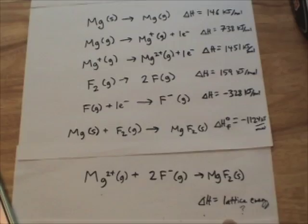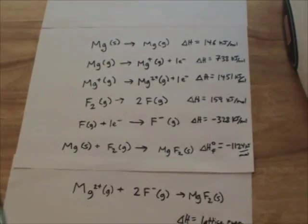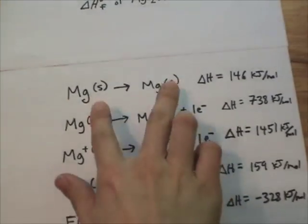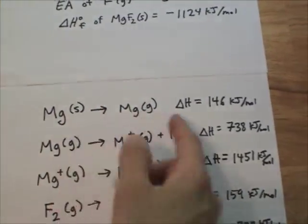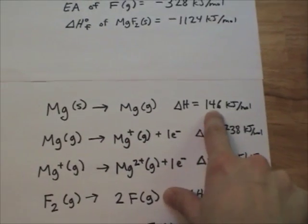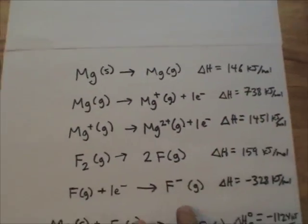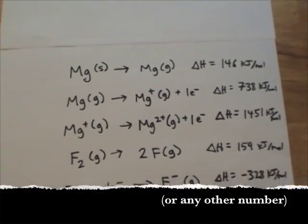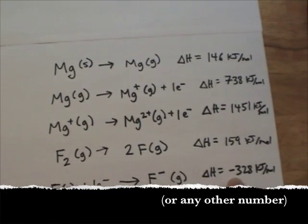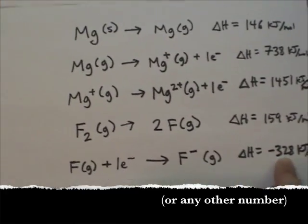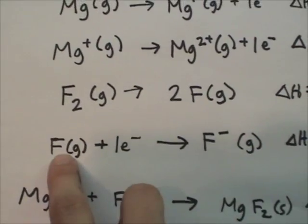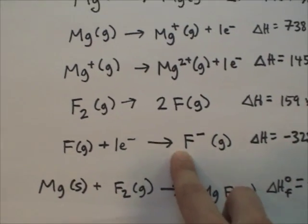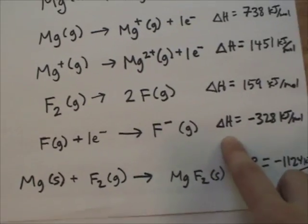And now what we need to do is use Hess's Law to calculate the lattice energy. The lattice energy is magnesium ions in the gaseous state to the magnesium fluoride solid. So Hess's Law - you remember that if you flip an equation, then delta H becomes negative. If you multiply a chemical equation by 2, then you multiply the delta H by 2.